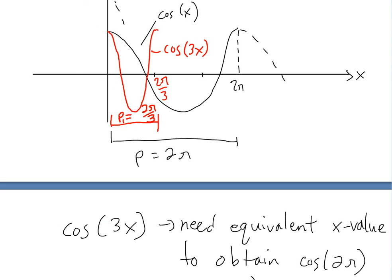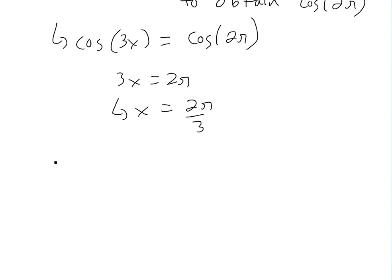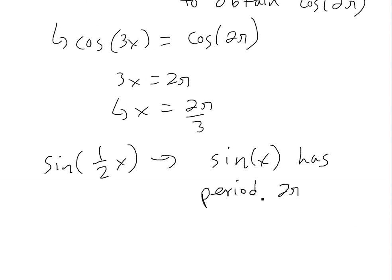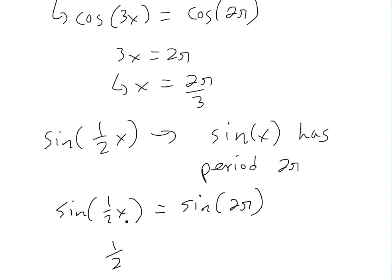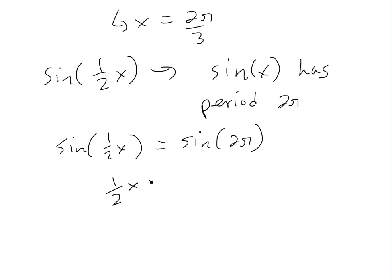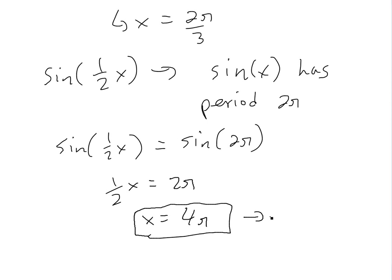We'll call this P1 for the first function. Now if we look at sin(1/2 x), we do the exact same thing. We know the period of sin(x) is 2π. Finding the equivalent x value: sin(1/2 x) equals sin(2π), so 1/2 x equals 2π, and x equals 4π. So the period of sin(1/2 x) is 4π. We'll call this P2 equals 4π.